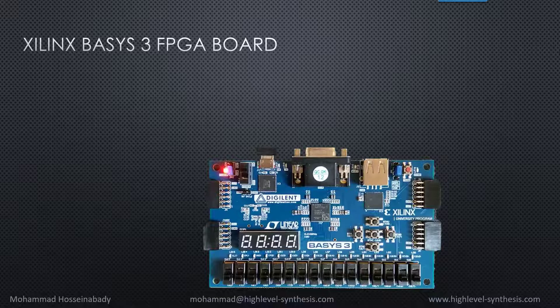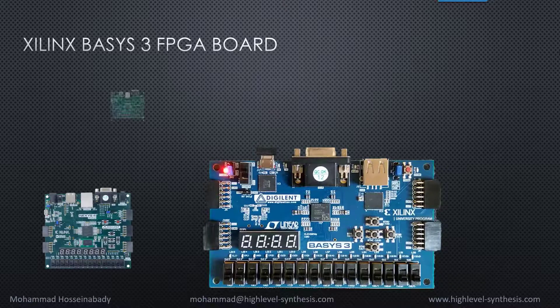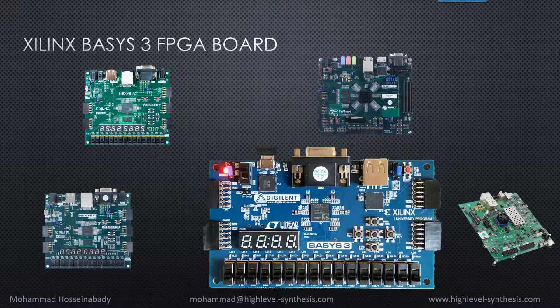In this course, I have considered a Xilinx Basys 3 FPGA board as our target platform. Basys 3 is an entry-level development platform based on the Artix-7 Xilinx FPGA, designed exclusively for Vivado Design Suite. This board is cheap and accessible by almost all students, researchers, and individuals. However, the concepts and techniques explained in this course are valid for all other Xilinx FPGAs.